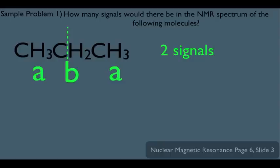That means we should expect to see two signals in the HNMR for this molecule. That's the skill. Sometimes these questions alone appear on an organic chemistry test; other times, this skill is just part of a bigger problem.